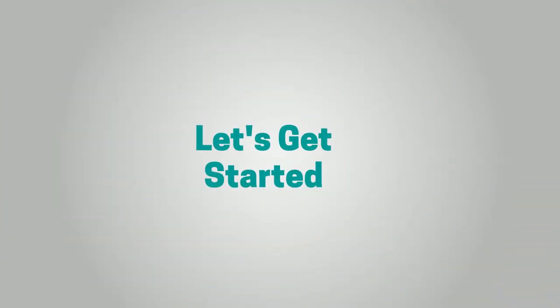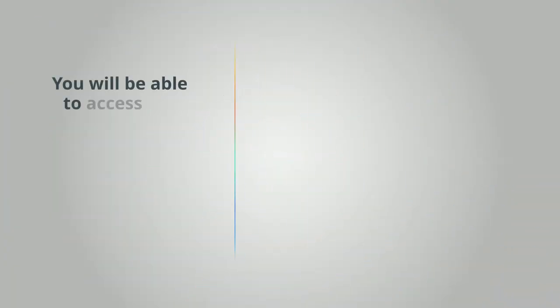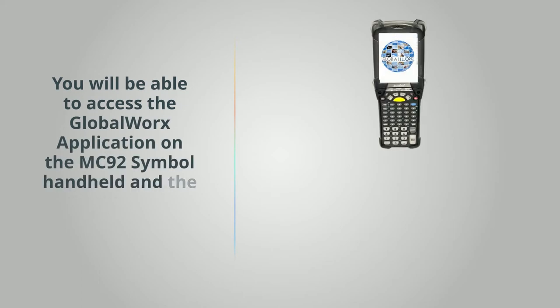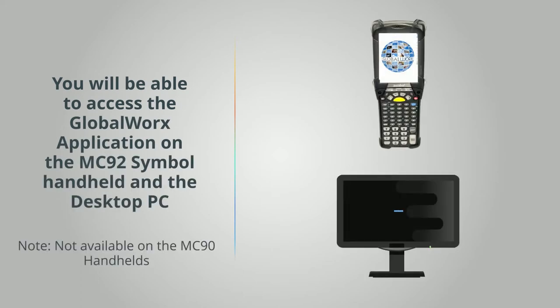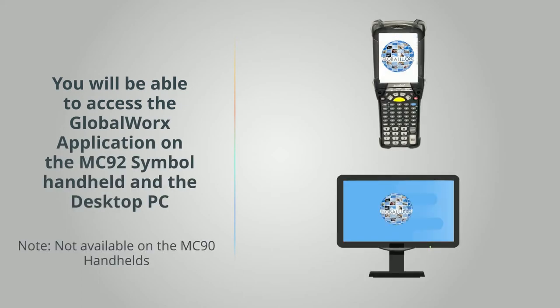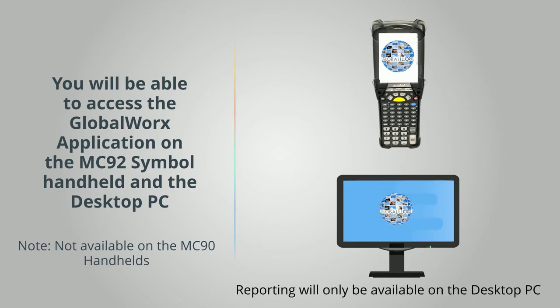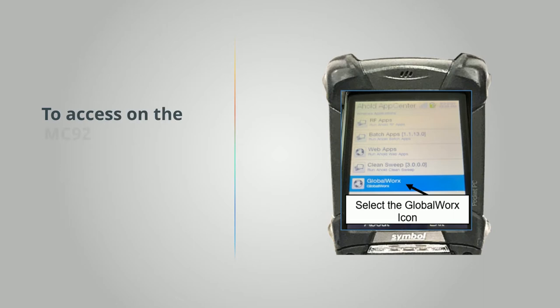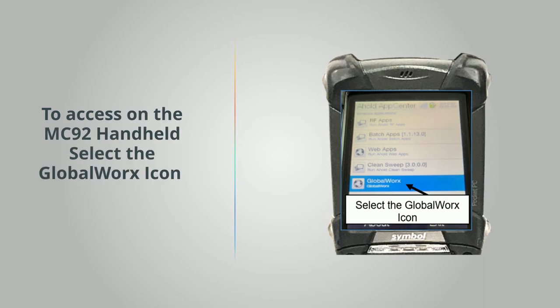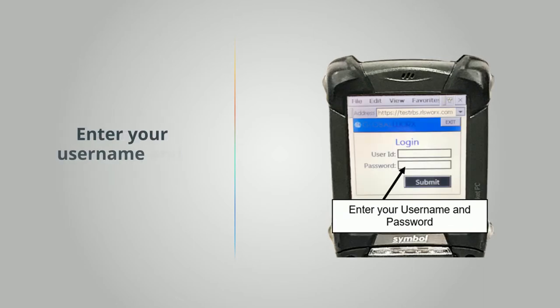You will be able to access the Global Works application on the MC92 Symbol Handheld and the desktop PC. Reporting will only be available on the desktop PC. To access on the MC92 Handheld, select the Global Works icon, enter your username and password.